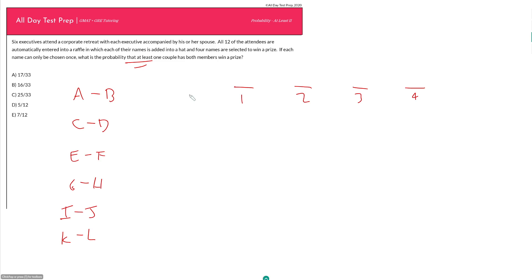In this case, if we were to do what we did in the last problem and just write out what are the ways that I can get at least one couple where both members win a prize, that really means the probability of exactly one couple is picked plus the probability that two couples are picked. Then once I've selected two couples, all four of my slots are filled and there's no more possible outcomes.